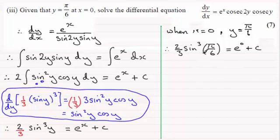Well, we've got the 2/3 here, and π/6 - that's going to be a half - so if we cube that, that's going to be one eighth. e^0, that's 1, and then we've got plus c.